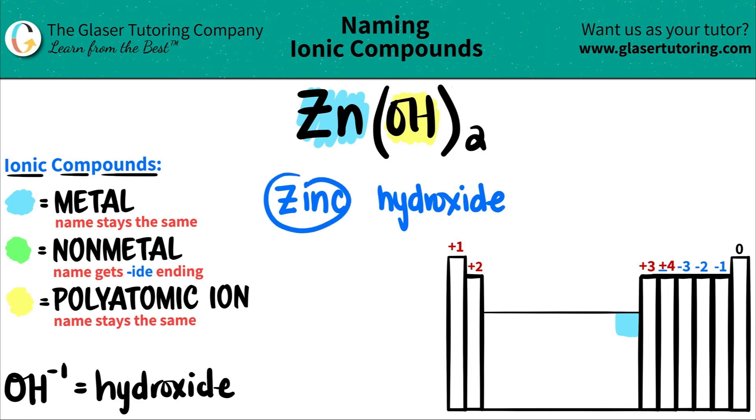Now this one, zinc is in our transitional metal group. So you would think that we would need a Roman numeral. However, this is one of the exceptions. So star this one out guys, zinc only has one charge. Zinc is always going to be a plus two charge.